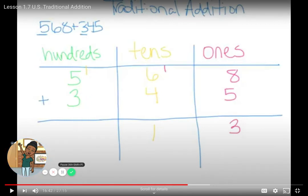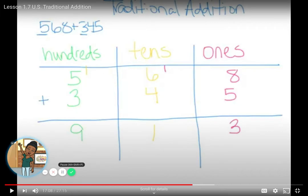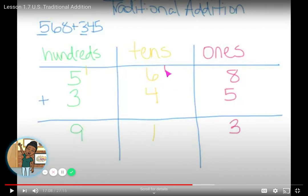Now at my hundreds column I add 1 plus 5 plus 3 equals 9. So my answer is 913. That is how US traditional addition works — carrying ones to the next place value. My ones column answer was 13, I carried 1 to tens. My tens column answer was 11, I carried 1 to hundreds.